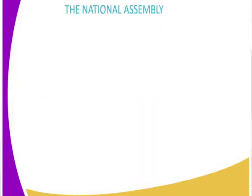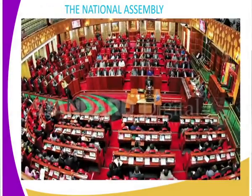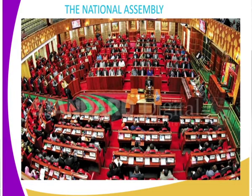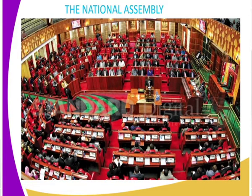Now straight to our discussion — the National Assembly. We said it comprises 290 members elected from each constituency, and we also have 47 women representatives. You can see that is the National Assembly. You can see the speaker's chamber, the two sides — those in government and those in opposition.